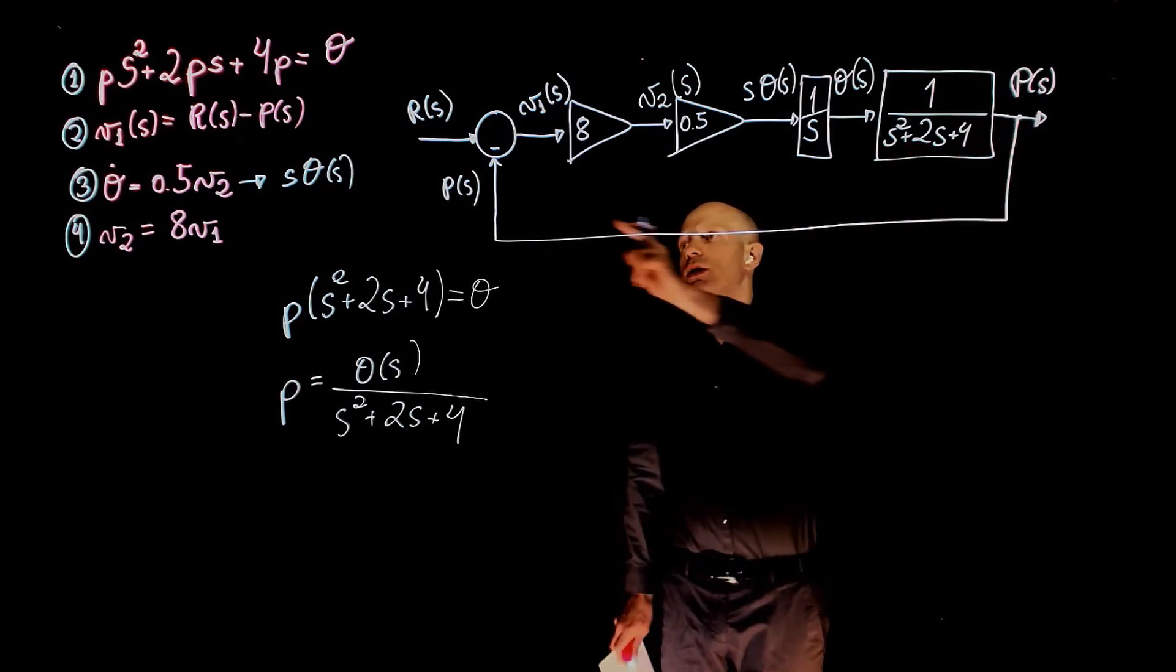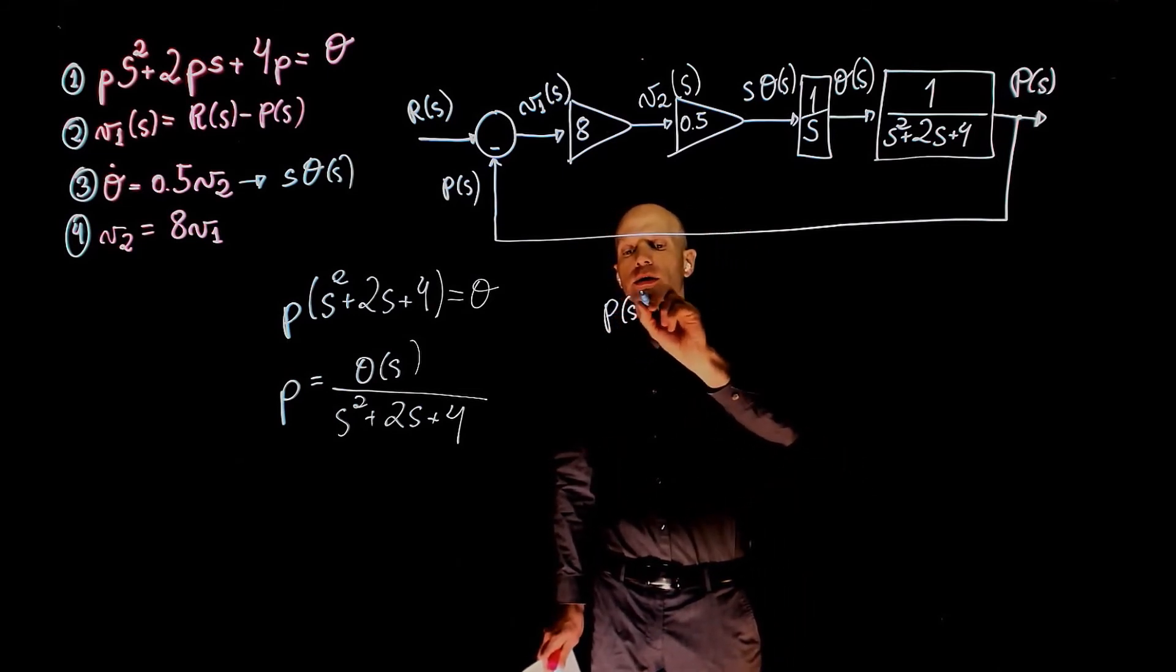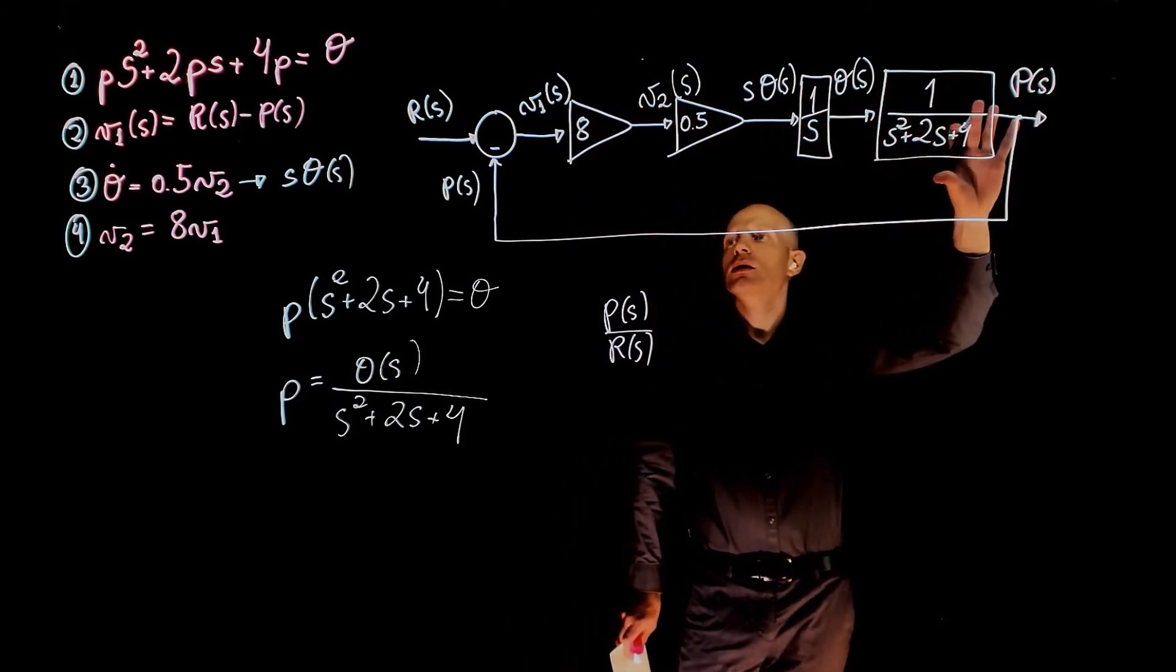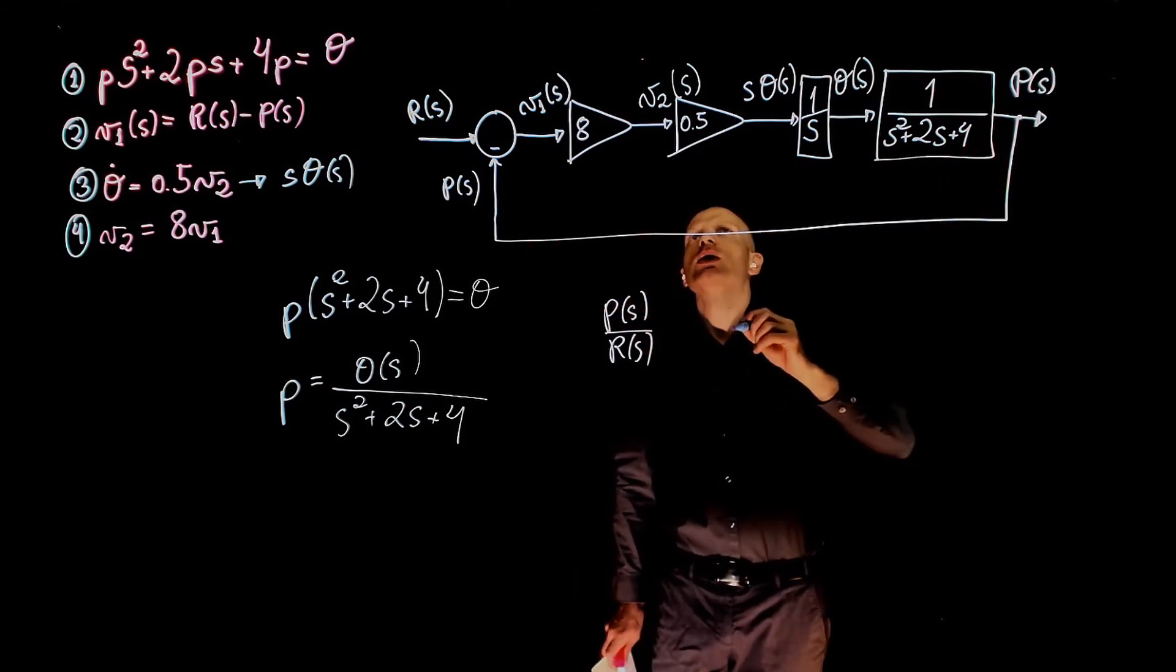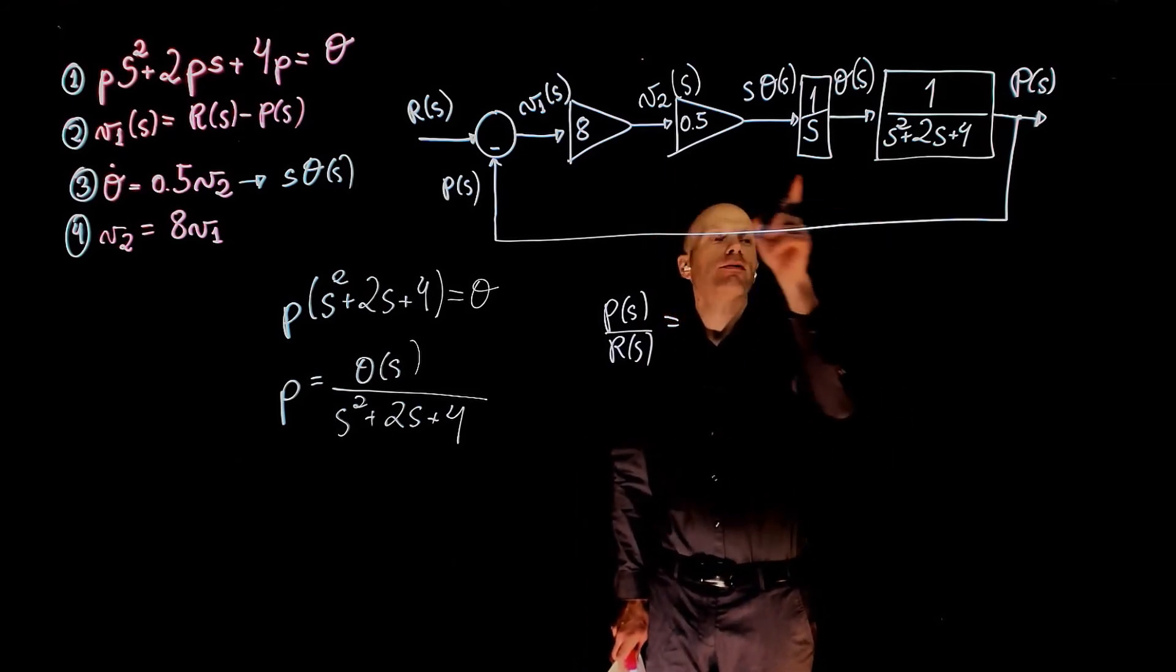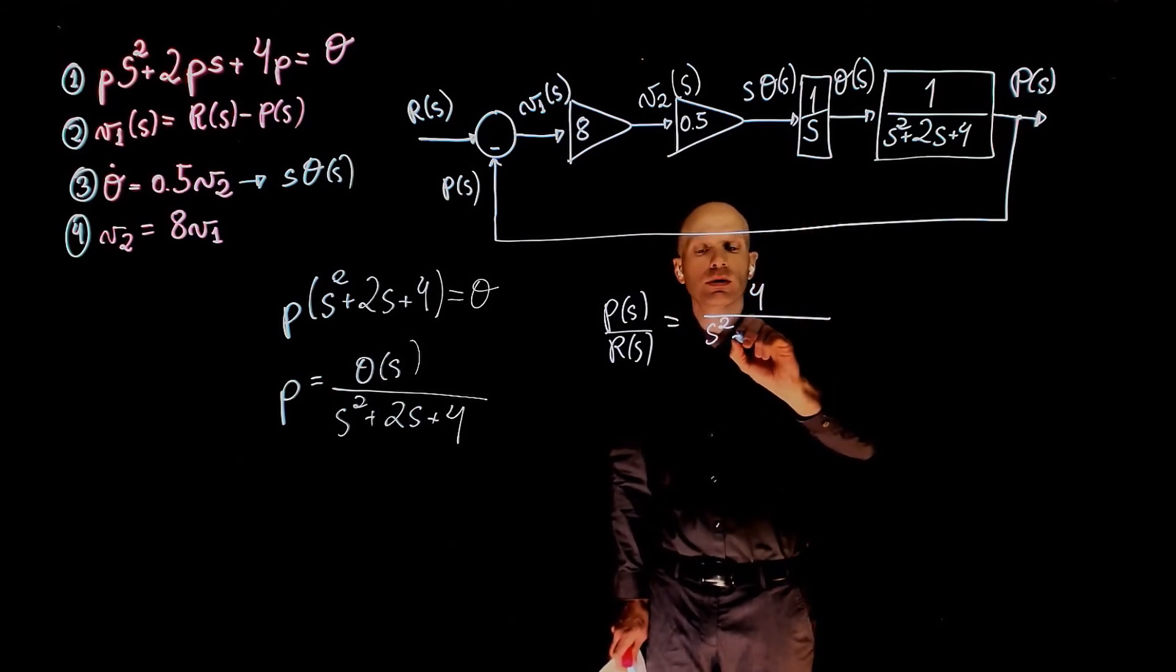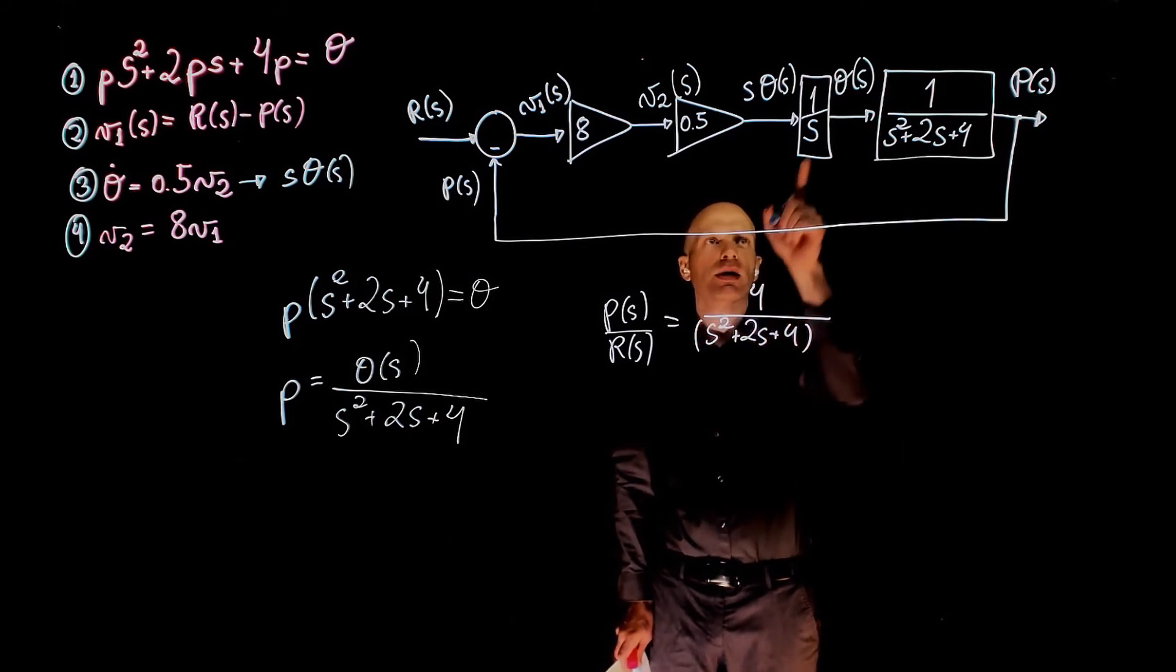What is the transfer function p over r? p over r is the main function, called main function a, divided by, because of this negative feedback loop, 1 plus a. So p of s divided by r of s is—the multiplication here gives 4 over s squared, s squared plus 2s plus 4, all times s.